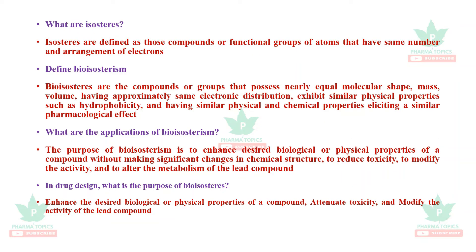What are isosteres? Isosteres are defined as compounds or functional groups of atoms that have the same number and arrangement of electrons. What is bioisosterism? Bioisosteres are compounds or groups that possess nearly equal molecular shape and molecular volume, have approximately the same electronic distribution, exhibit similar physical properties such as hydrophobicity, and elicit a similar pharmacological effect.